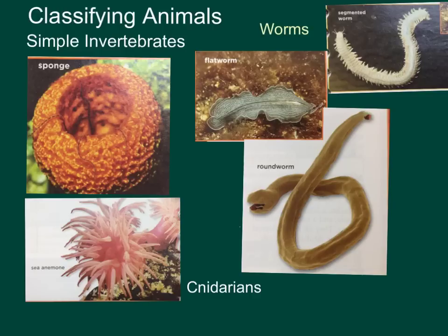Back to worms. Flatworms have a flat body plan. They have a head with simple eyes and a mouth. They only have one body opening, and undigested food must leave through its mouth — so what goes in their mouth also comes out their mouth. It's gross.